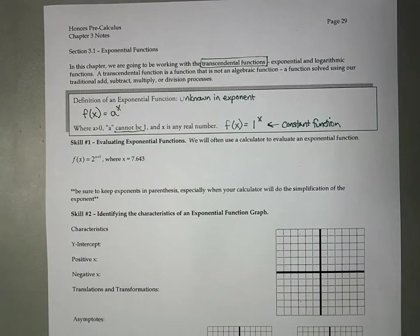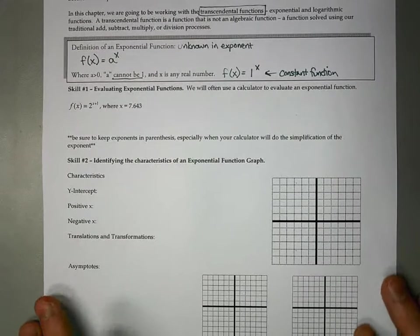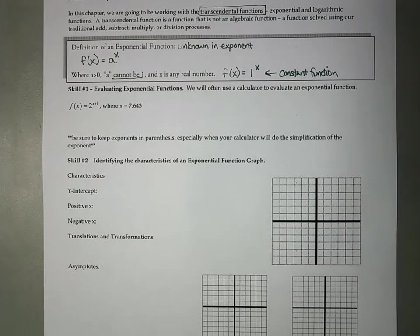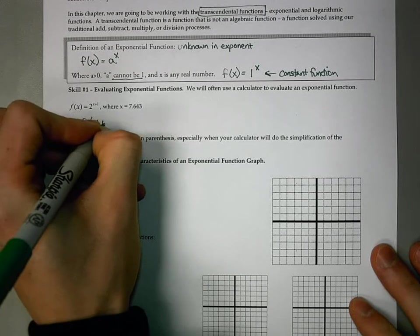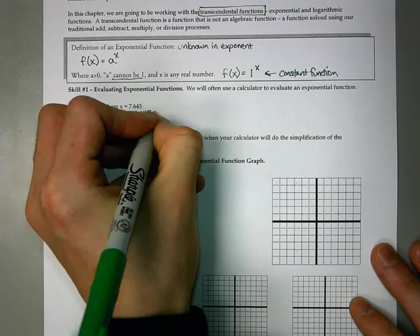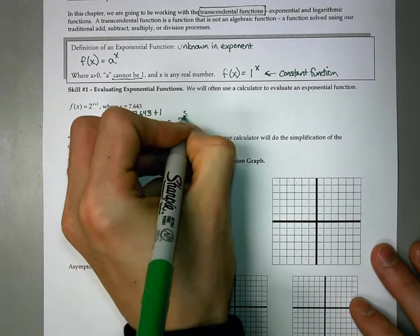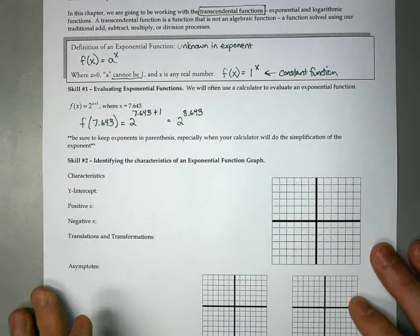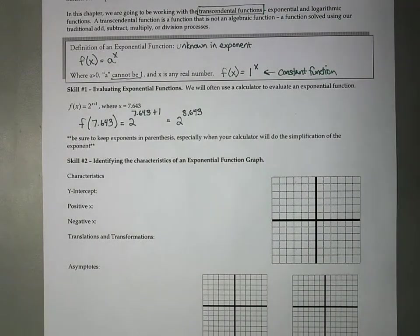So the first thing we want to be able to do is evaluate exponential functions, and we're often going to use a calculator for this. In this first example, f(x) equals 2 raised to the x plus 1, where x is 7.643. We're going to plug in 7.643 wherever we see an x and then simplify. Since I don't know what 2 to the 8.643 is going to be, I'll plug that into my calculator, and you get something in the range of 399.76.